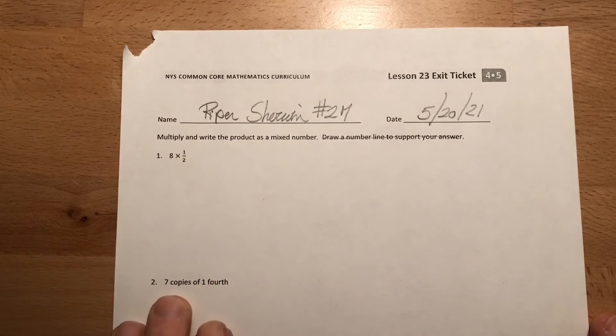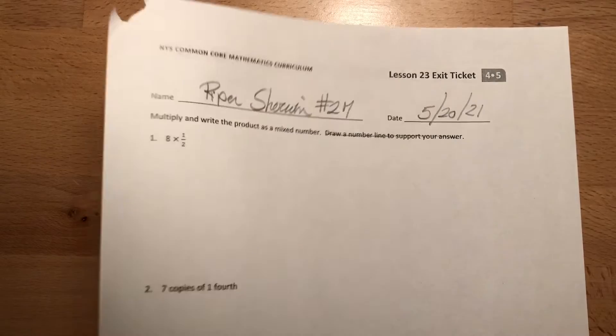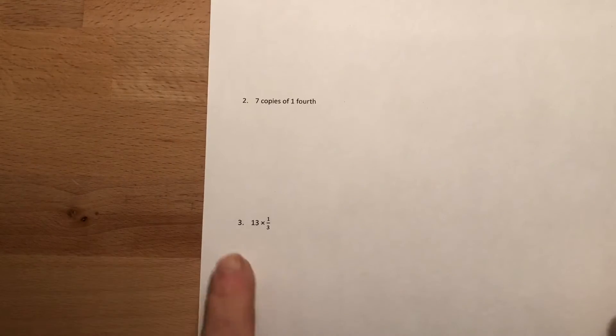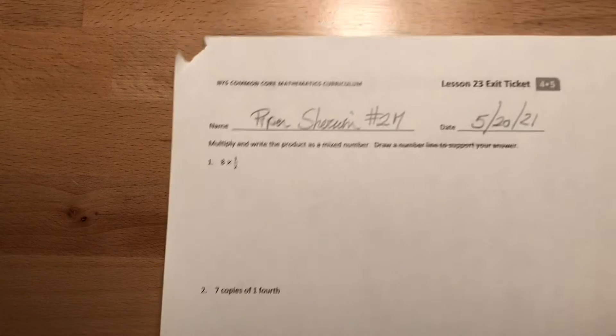So it's eight groups of one half. Down here it says seven copies of one-fourth, which is basically seven times one-fourth. Okay, and then 13 times one-third. All right, so let's see what we learned yesterday.